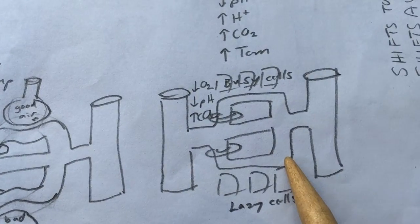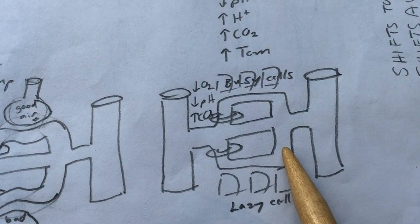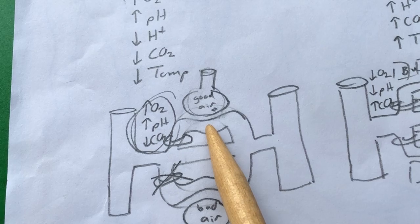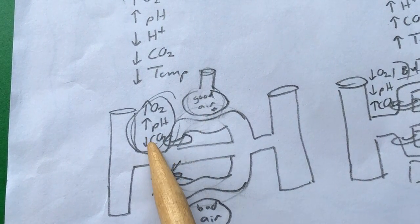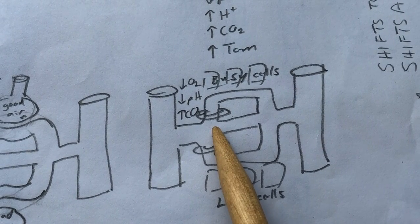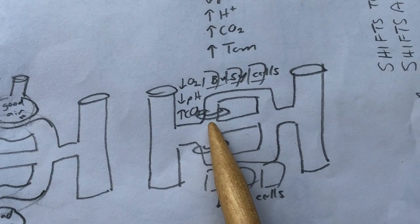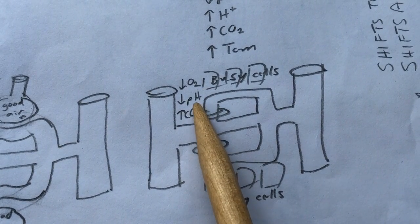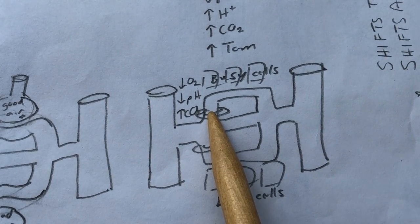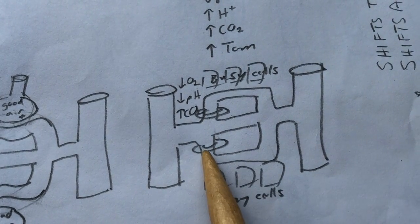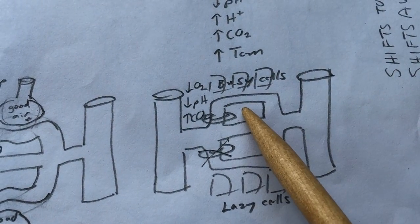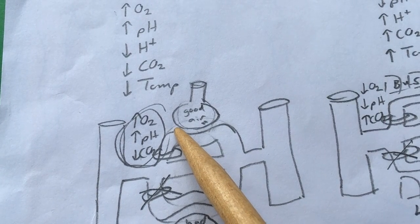In the systemic circuit, it's the opposite. Here you're delivering oxygen to where it's needed, so systemic precapillary sphincters open in areas with low oxygen, low pH, and high carbon dioxide. The reverse conditions cause systemic precapillary sphincters to close. In the pulmonary circuit you're finding who has oxygen; in the systemic circuit you're finding who needs it.